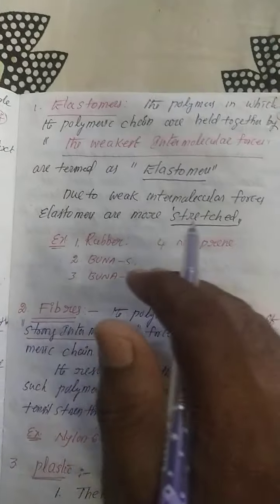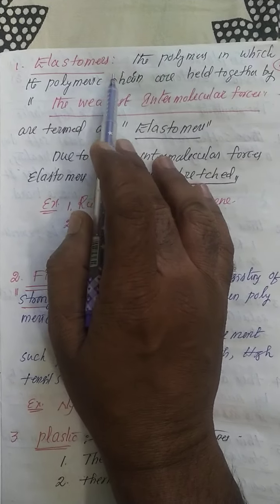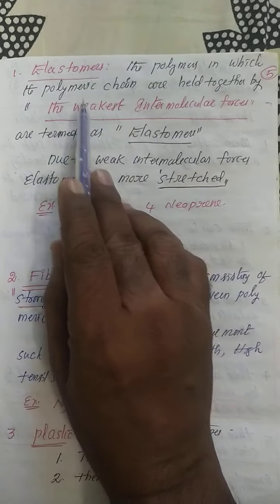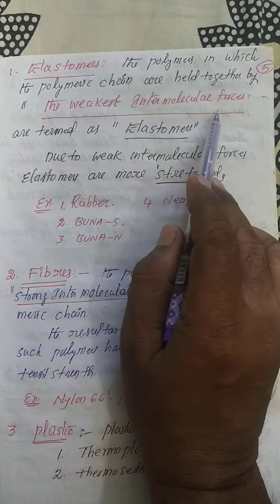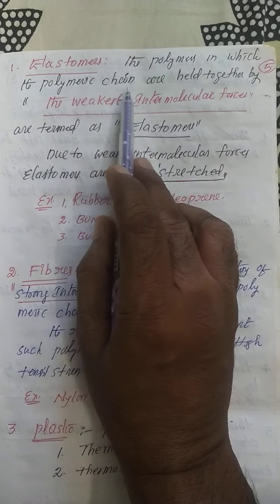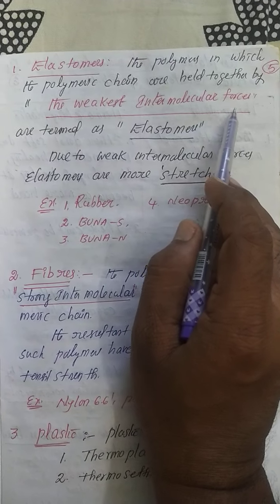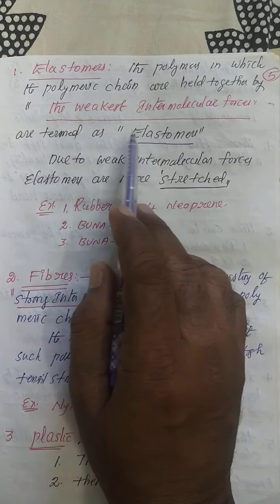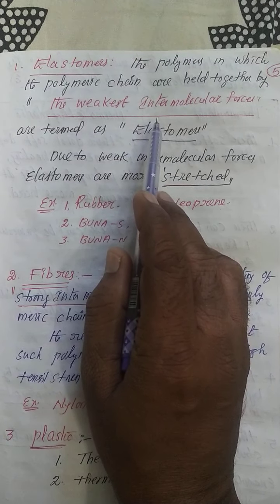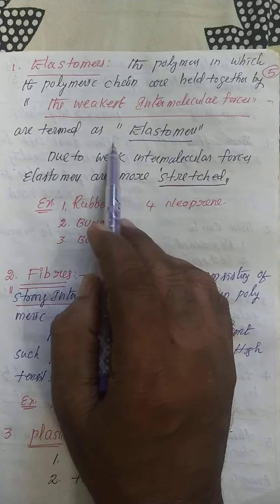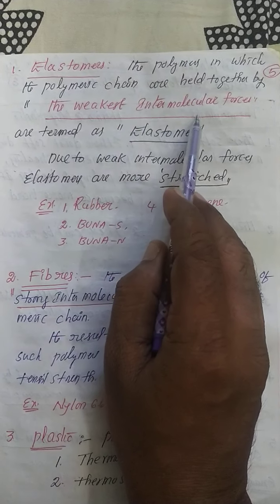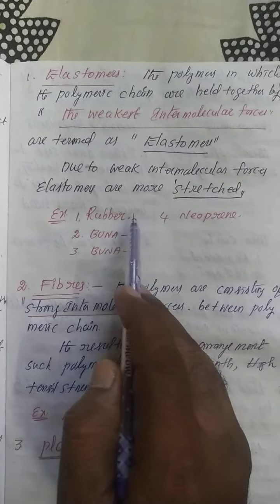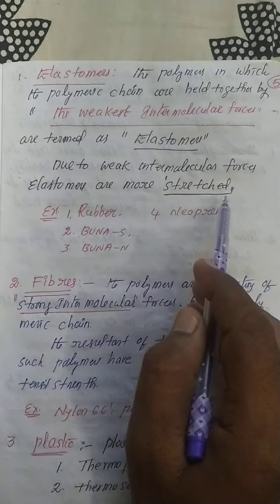First, elastomers. Elastomers are the type of polymers with the weakest intermolecular forces. The polymer in which polymeric chains are held together by the weakest intermolecular forces are termed as elastomers. This is a two-mark question at board level: define elastomers. Because the weakest intermolecular forces exist between the monomers, the material is more stretchable. For example, rubber can be easily stretched when force is applied.